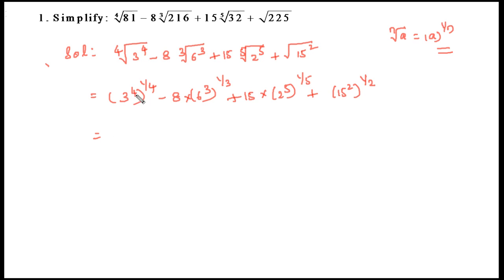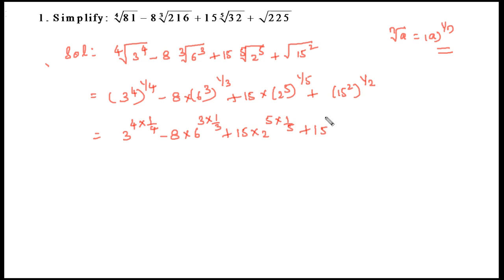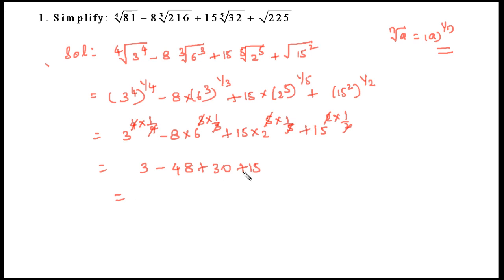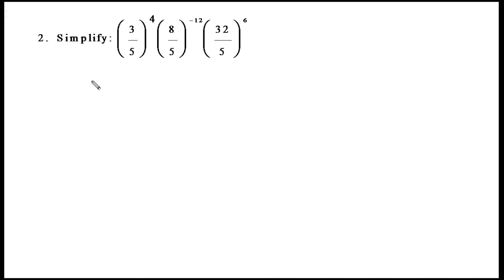Multiplying the powers using the law (a^p)^q = a^(pq): 3^(4×1/4) − 8·6^(3×1/3) + 15·2^(5×1/5) + 15^(2×1/2). The exponents cancel to give: 3 − 8×6 + 15×2 + 15 = 3 − 48 + 30 + 15 = 48 − 48 = 0.